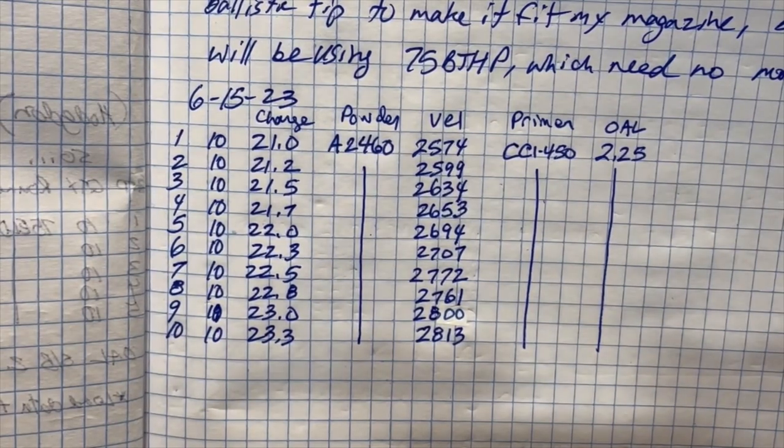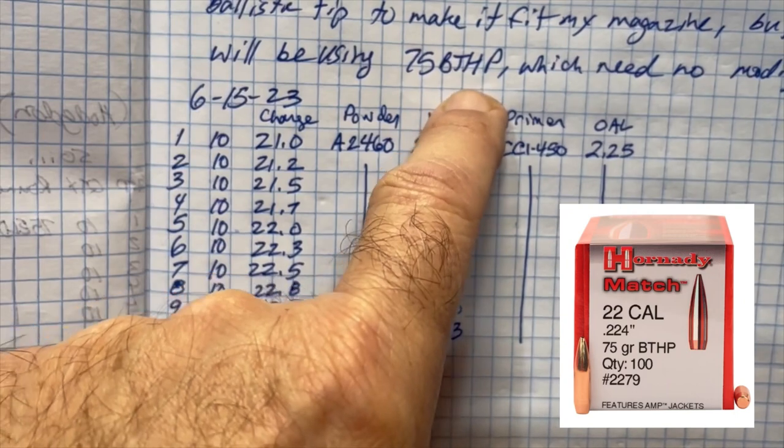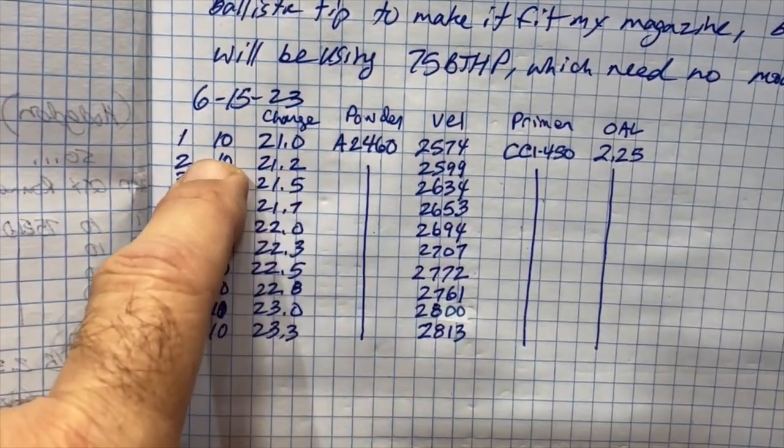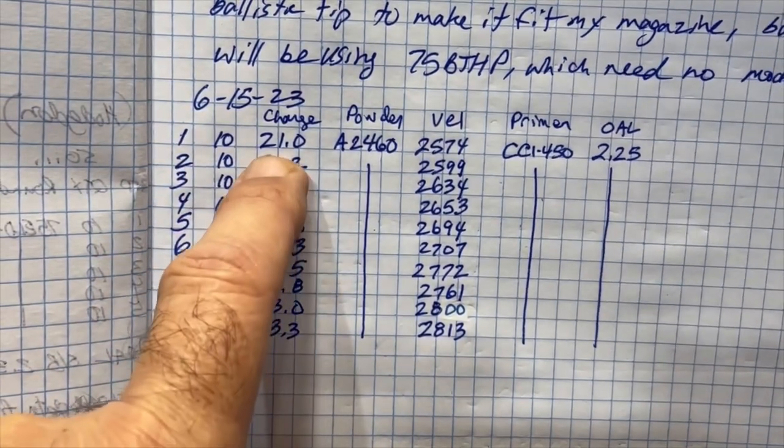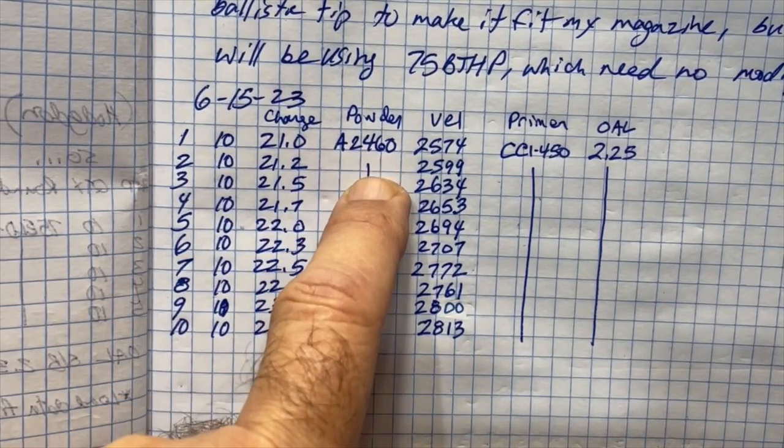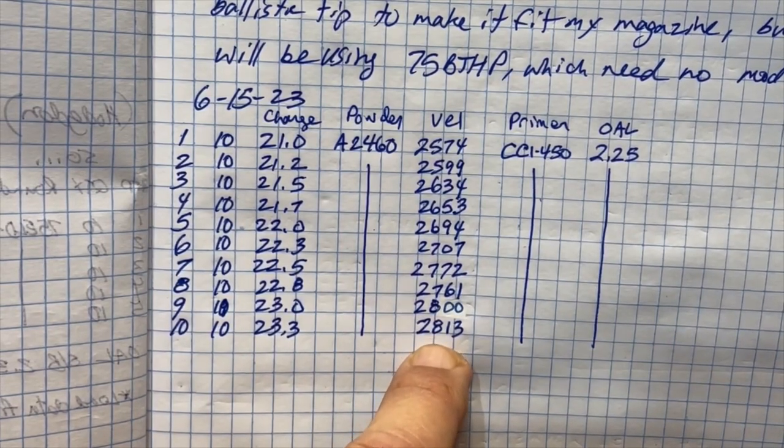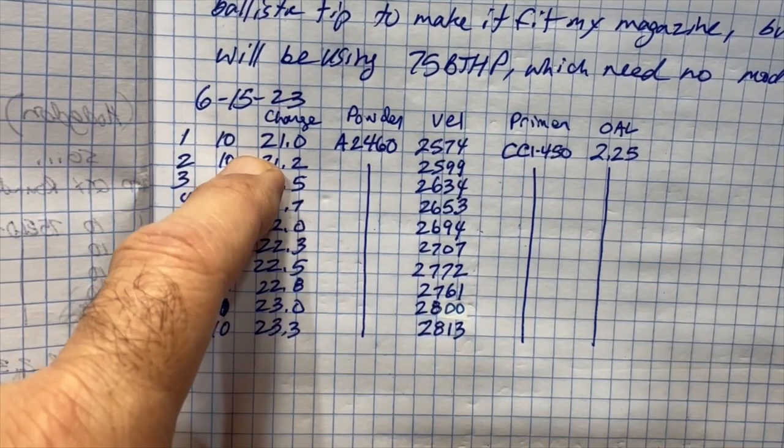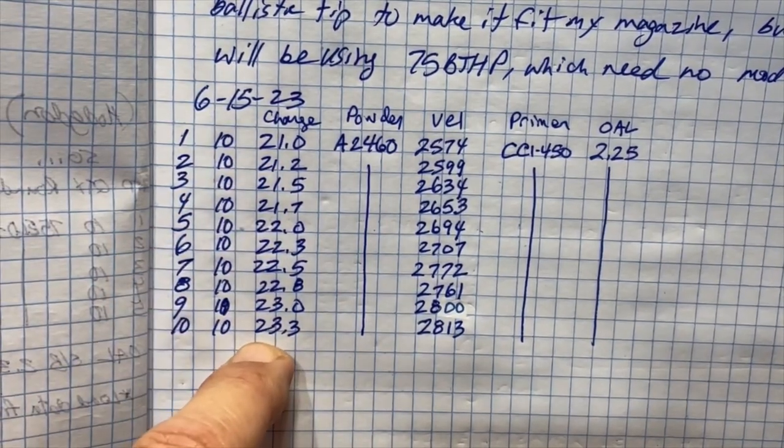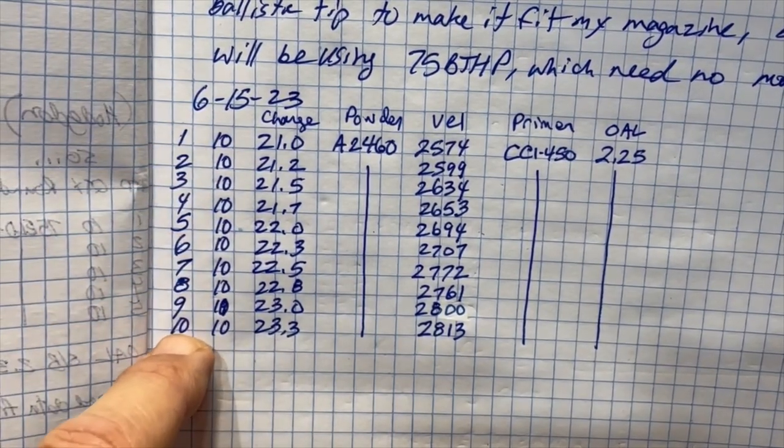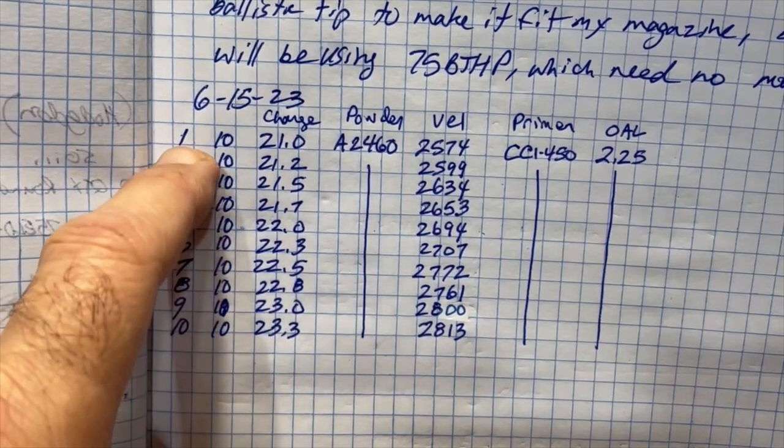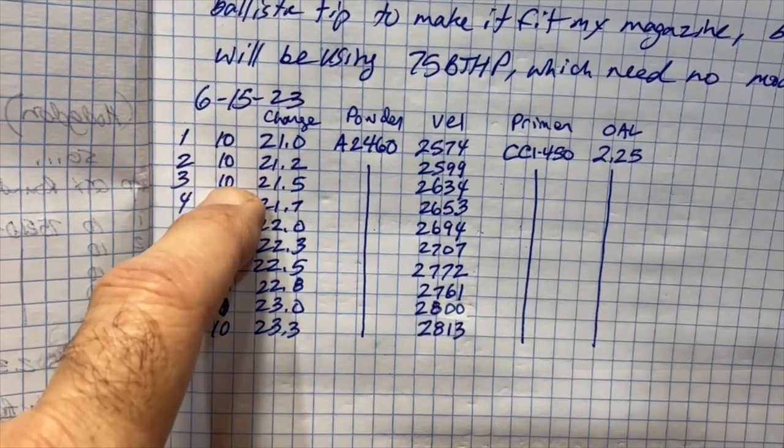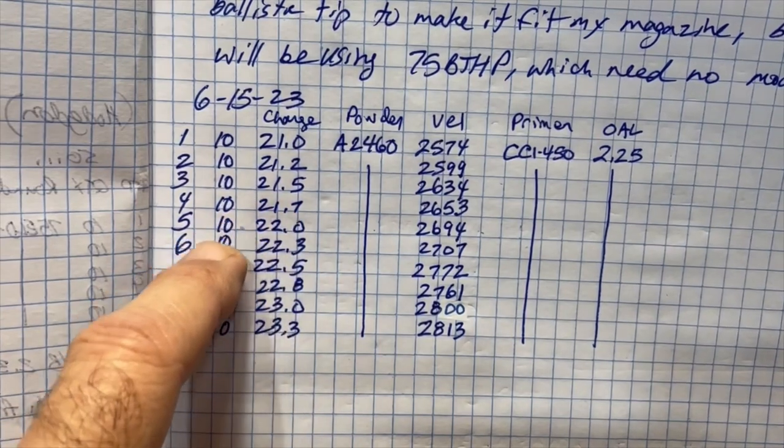Before we begin reloading, we need to know what we're going to be reloading. In my record book, I've made a list. It will be a 75-grain boattail hollow point bullet made by Hornady. We're going to be shooting 10 of each load. We'll be using Accurate 2460 powder. These are estimated velocities based on the book, not a chronograph. We'll be using a CCI 450 primer seated at 2.25 overall length, with charges ranging from 21 grains to 23.3 grains. The numbers over here will correspond to the targets. There'll be 10 rounds at 21 grains, 10 rounds at 21.2, 10 rounds at 21.5, and so forth.